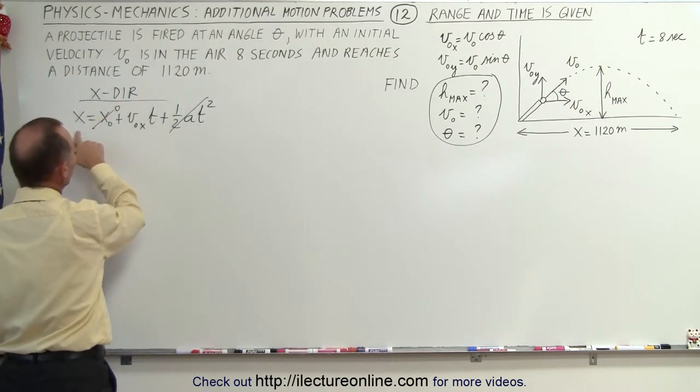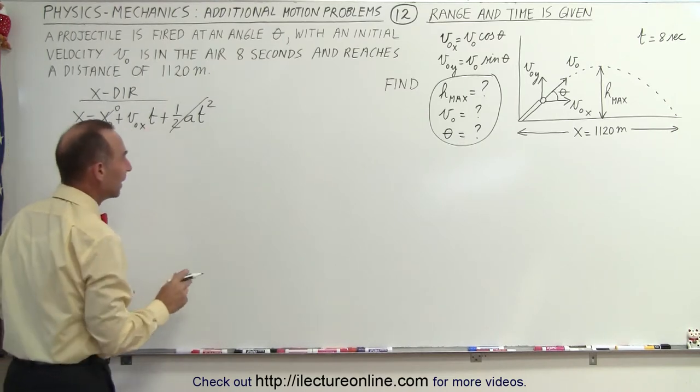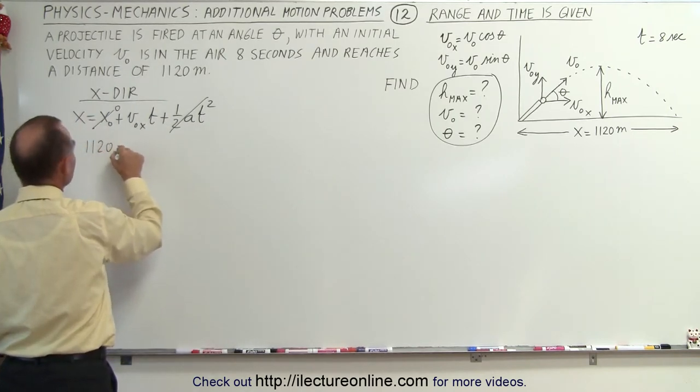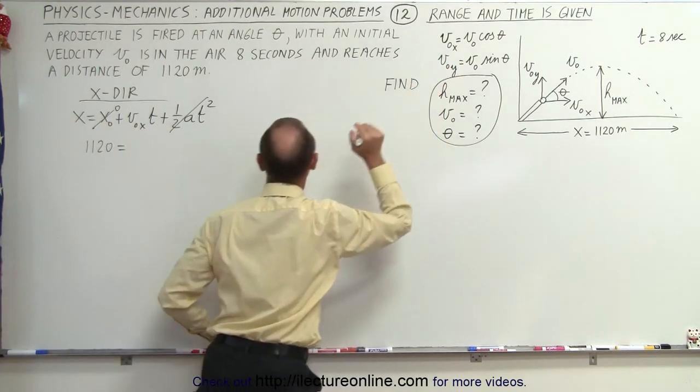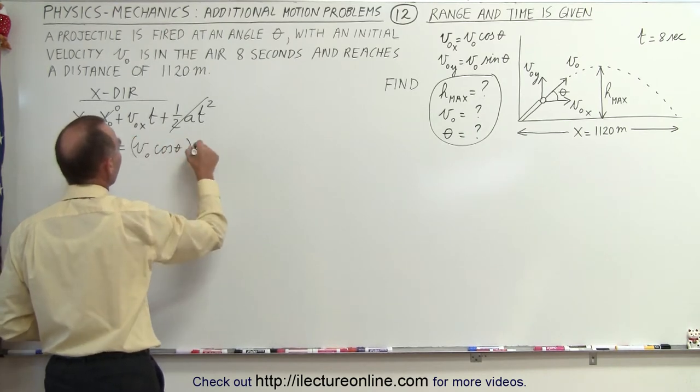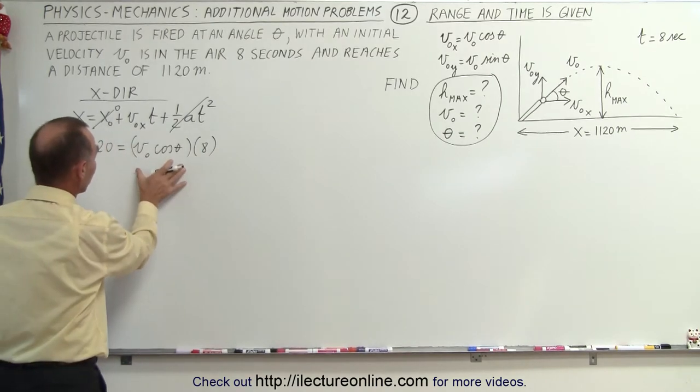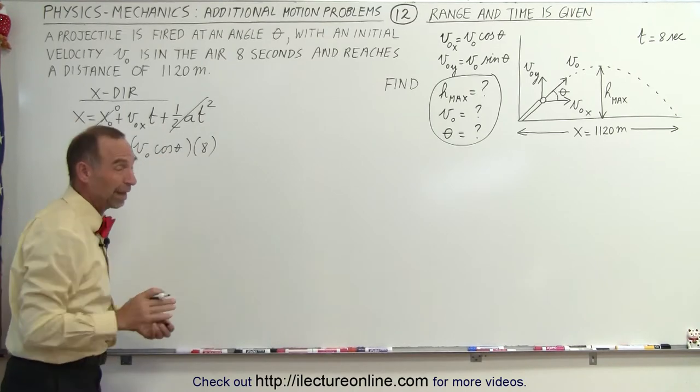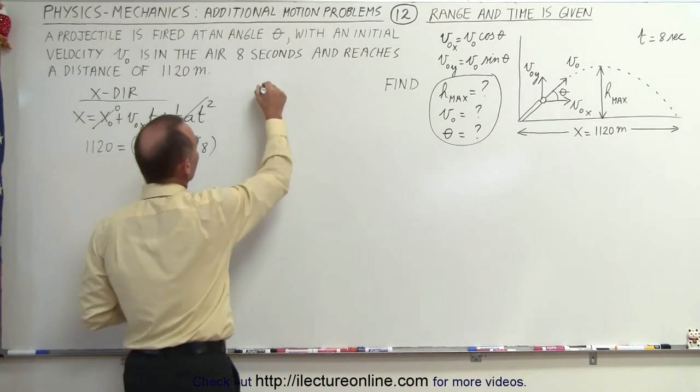And the initial position we can call that zero as well. So this equation reduces to the distance reached is equal to initial velocity in the x direction times time. And given what we're given, this will be 1120 equals v initial in the x direction, which is v initial times the cosine of theta times eight seconds. So here we have an expression with two unknowns, v initial and the angle theta. We have two unknowns, meaning we're going to need two equations.